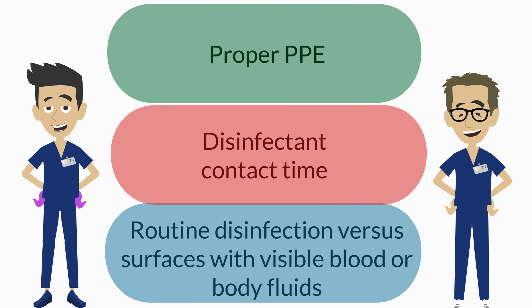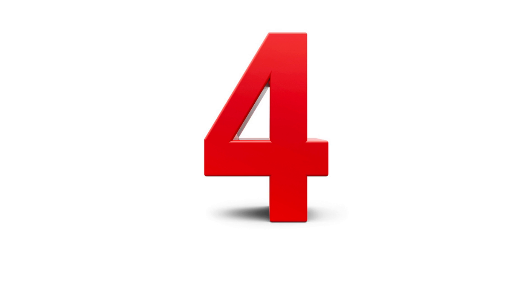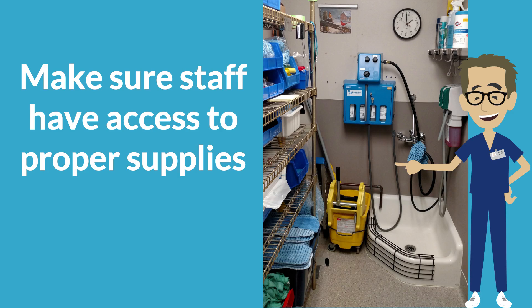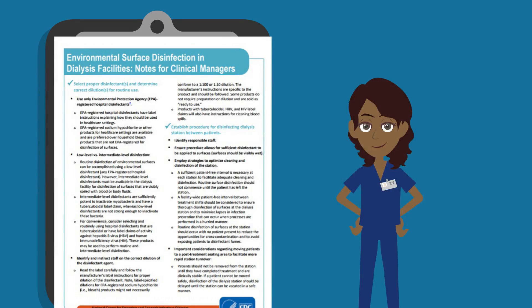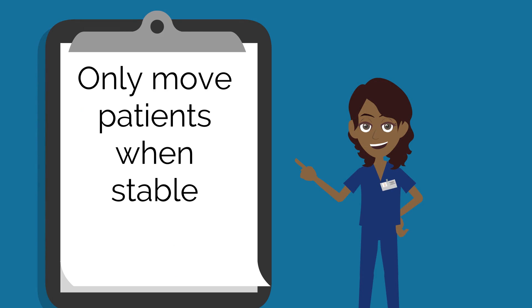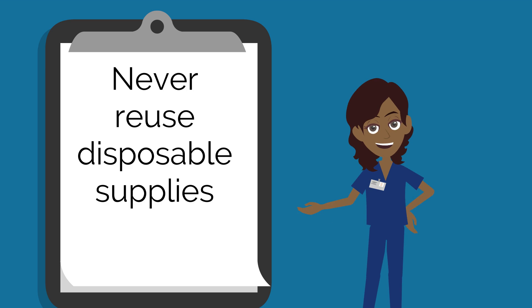This should include proper PPE selection, following the manufacturer's recommended contact time for the disinfectant solution, and management of routine disinfection versus surfaces with visible blood or body fluids. The fourth recommendation is to make sure that staff has access to proper supplies. Having supplies readily available and conveniently located for staff ensures that the process can be successfully performed every time. The publication also issues these two reminders: never move patients until they are hemodynamically stable and do not begin to clean the station for the next patient until the first one has left. Never reuse disposable supplies on another patient.